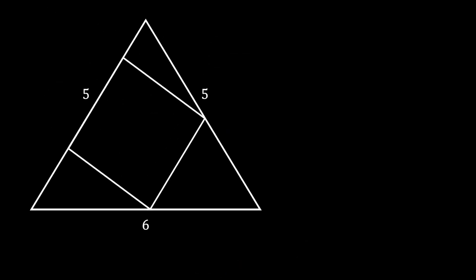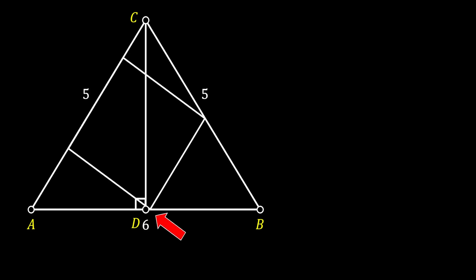We are going to start this method by labeling all the vertices of our triangle as A, B, and C. Then we will pull the height from the apex at point C and label its intersection with the base as D. Here I just want you to notice the fact that this height is not located at the bottom vertex of the square. Now let's calculate this height.